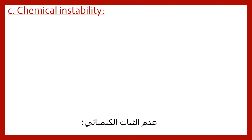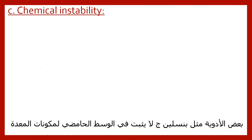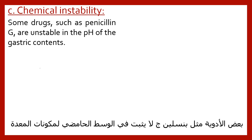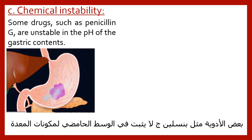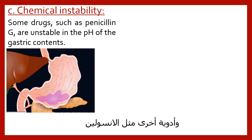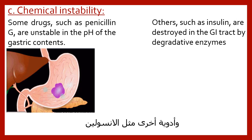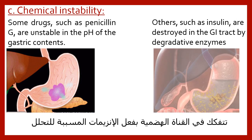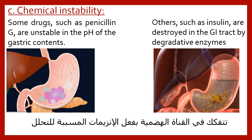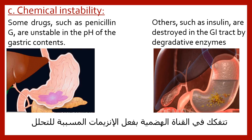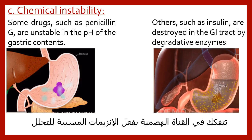Chemical instability: some drugs, such as penicillin G, are unstable in the pH of the gastric contents. Others, such as insulin, are destroyed in the GI tract by degradative enzymes.